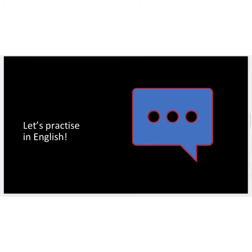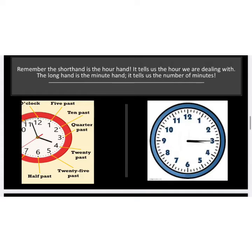Now before we go to the Spanish, let's practice a bit in English first. Remember, the hour hand is the short hand and it tells us the hour we are dealing with, and the long hand is the minute hand. Looking at this clock, the short hand is pointing on the 3, so we are dealing with the hour of 3. The long hand, the minute hand, is also pointing on the 3, which means it is quarter past or 15 minutes after the hour.